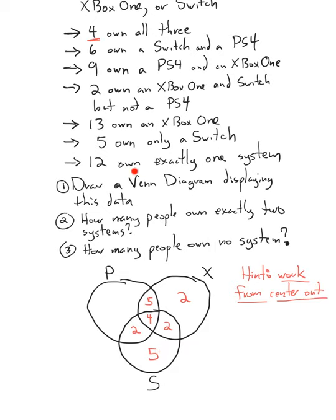And the last one is 12 own exactly one system. How many own exactly one system? 12. Exactly one system is this area, this area, and this area — that must add up to 12. We already have seven accounted for with five and two, so if we subtract those from 12, we'll have how many are left over in the remaining region. 12 minus 5 minus 2 is 5. And we can check: 5 plus 5 plus 2 is indeed 12. So there are 12 people that own exactly one system. We've now filled in all the areas inside of the circles.